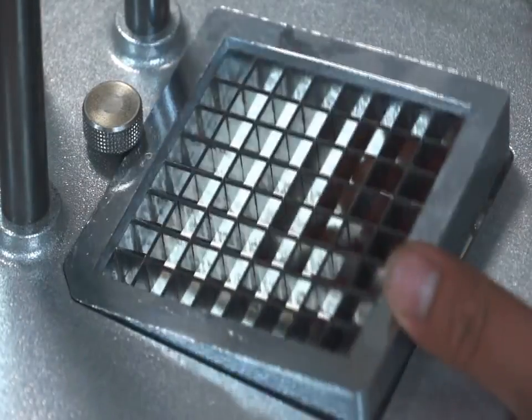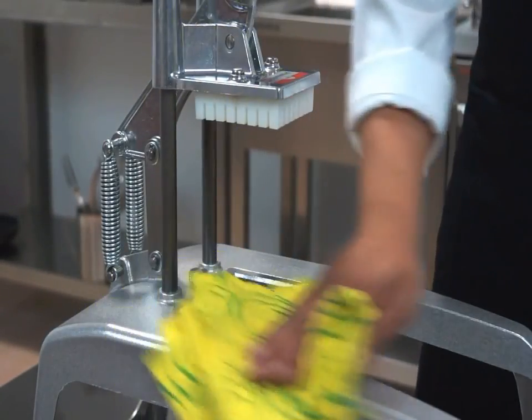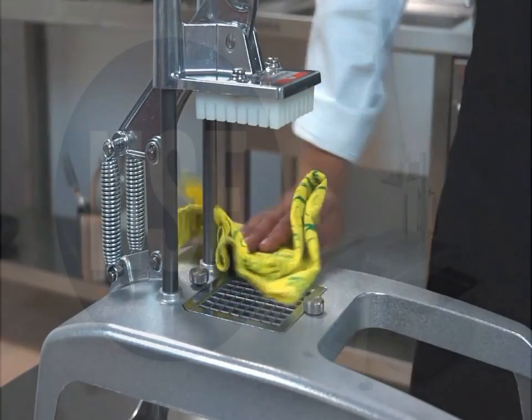The grid and the pusher are easily removable to be cleaned in hot water. The rest of the machine can be cleaned with a damp cloth.